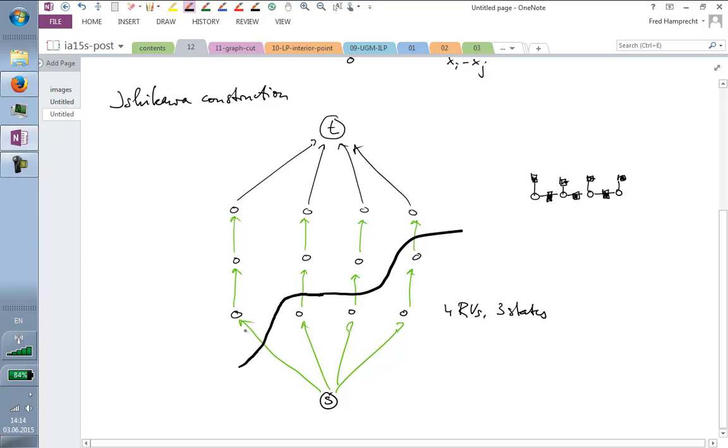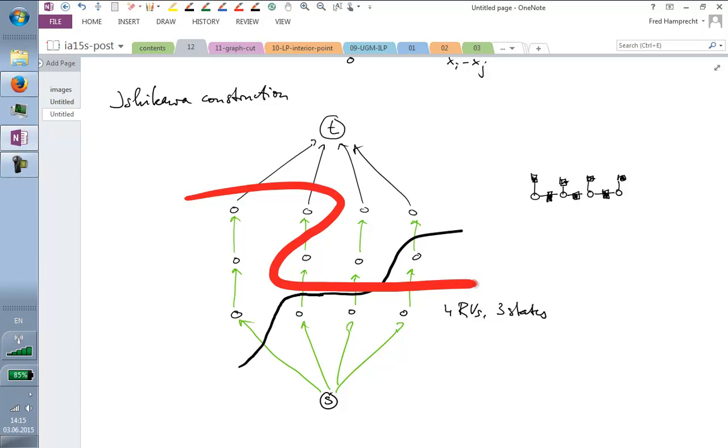Now, there are certain things we want to rule out. For example, I do not want to obtain a cut which looks like this. The problem with this kind of cut is that I don't get a unique label for every vertex. I don't get a unique label for every random variable. So, I want to prohibit this, I want to disallow my cut to turn back on itself. I want to disallow it cutting this edge here.